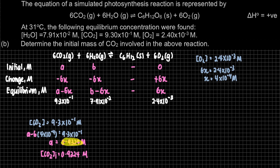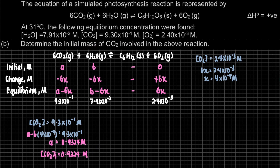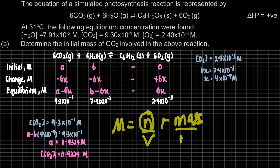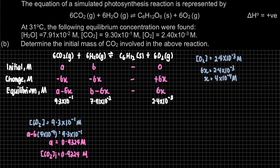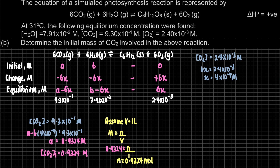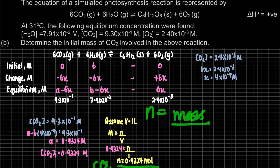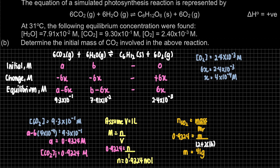Since the volume is not given, we assume volume = 1 litre. With molarity = moles/volume, the number of moles of CO₂ equals 0.9324 mol. To find the mass, we use: moles = mass / molar mass. The molar mass of CO₂ is 12 + 2×16 = 44 g/mol. Therefore, mass = 0.9324 × 44 = 41 grams.